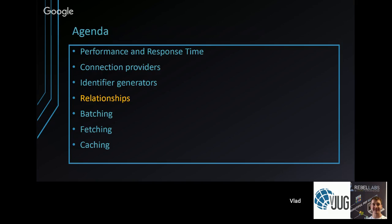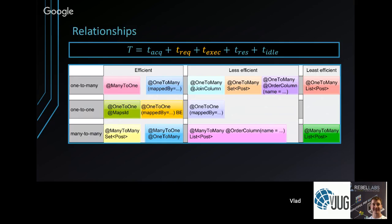JPA relationships also significantly affect performance. From the database perspective there are only three association types: one-to-many (one foreign key on the child side), one-to-one (foreign key with unique constraint), and many-to-many (two foreign keys with a join table). In JPA there are many combinations because associations can be unidirectional or bidirectional, and you can use different collection types like Set, List, and Map.